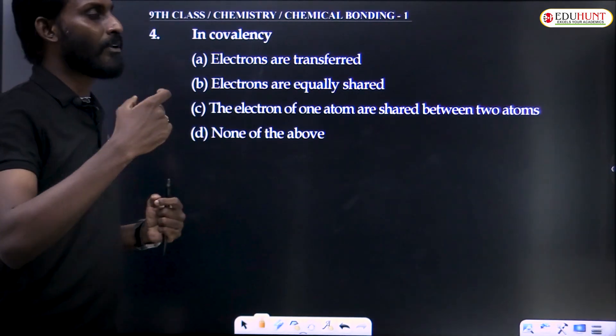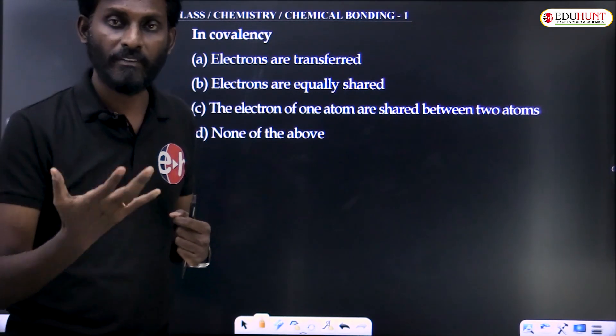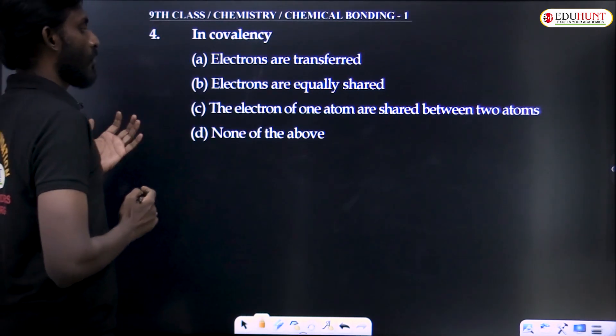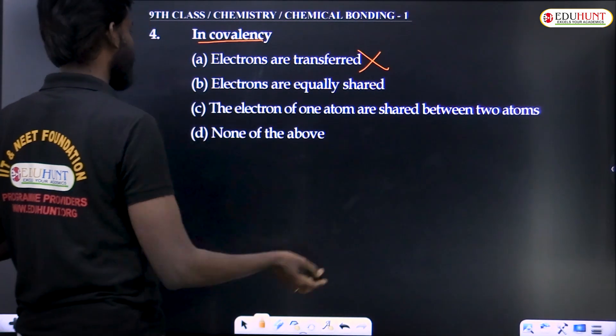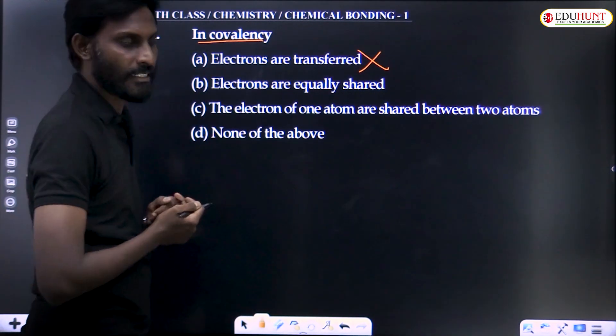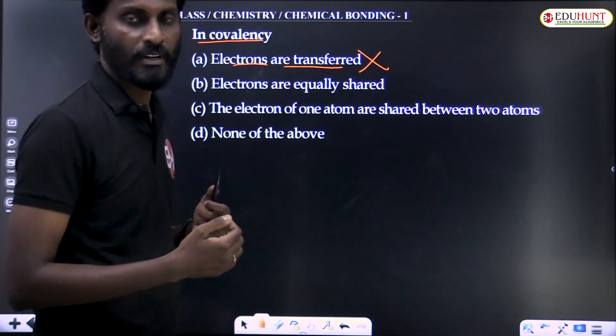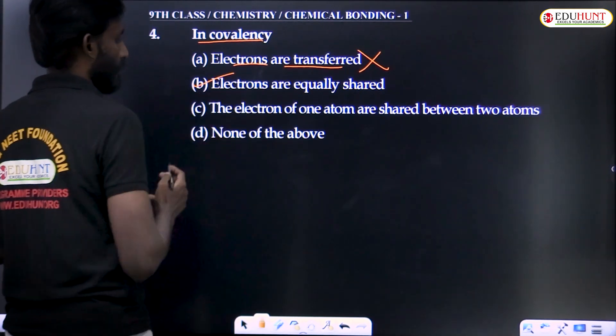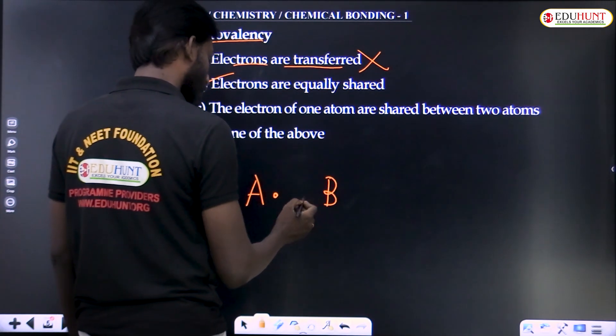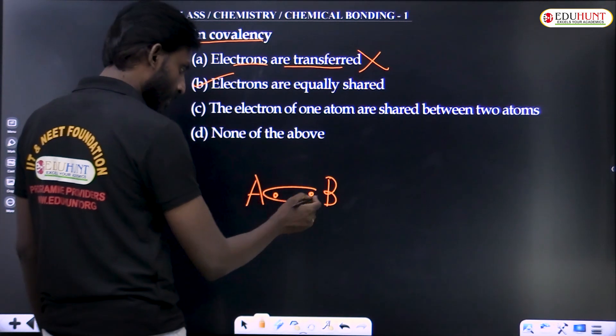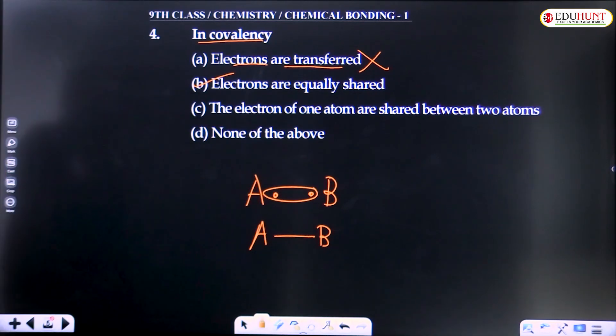So the number of electrons contributed for sharing to get a stable configuration is called covalency. In covalency, electrons are shared. Electrons transferred is called electrovalency. Electrons are equally shared. One atom A contributes one electron, another atom B contributes one electron. They equally share this pair. That pair is called a covalent bond, represented by a single line.